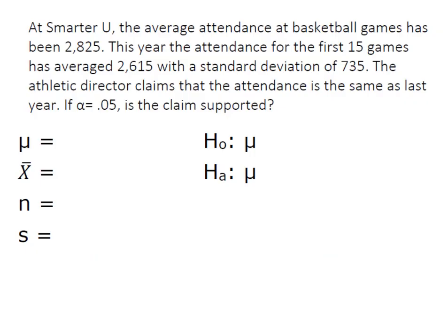At SmarterU the average attendance at basketball games has been 2,825. This year attendance for the first 15 games has averaged 2,615 with a standard deviation of 735. The athletic director claims that the attendance is the same as last year. If alpha equals 0.05, is his claim supported?